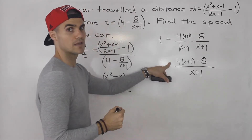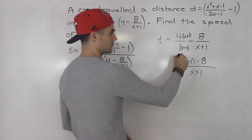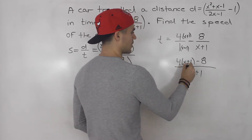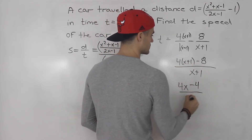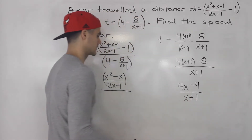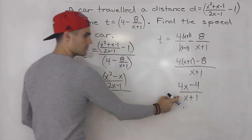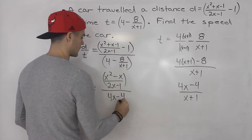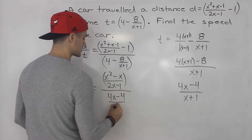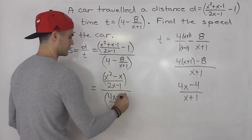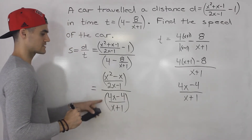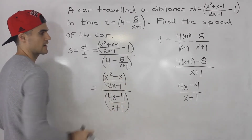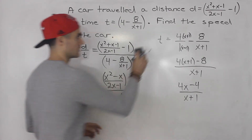That's how we make the time expression into one fraction. We distribute the 4 inside the bracket and simplify like terms: we get 4x, then positive 4 minus 8 is negative 4, all over x plus 1. So the simplified time expression is 4x minus 4 over x plus 1.